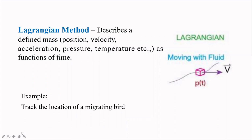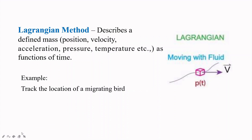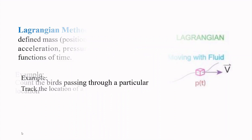For example, tracking the location of a migrating bird: whenever a bird is migrating from one place to another, we fix a tracking device on that bird so that we can estimate where the bird is at any given time. The tracking device follows the bird — as the bird moves, the tracking device also moves along with it. This is the Lagrangian method.